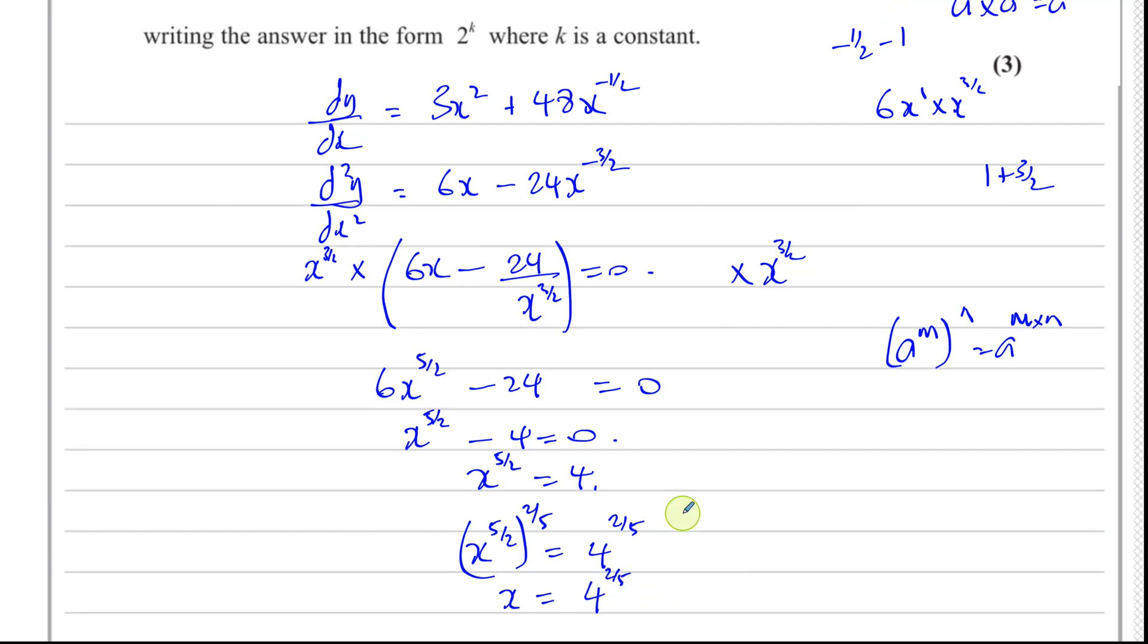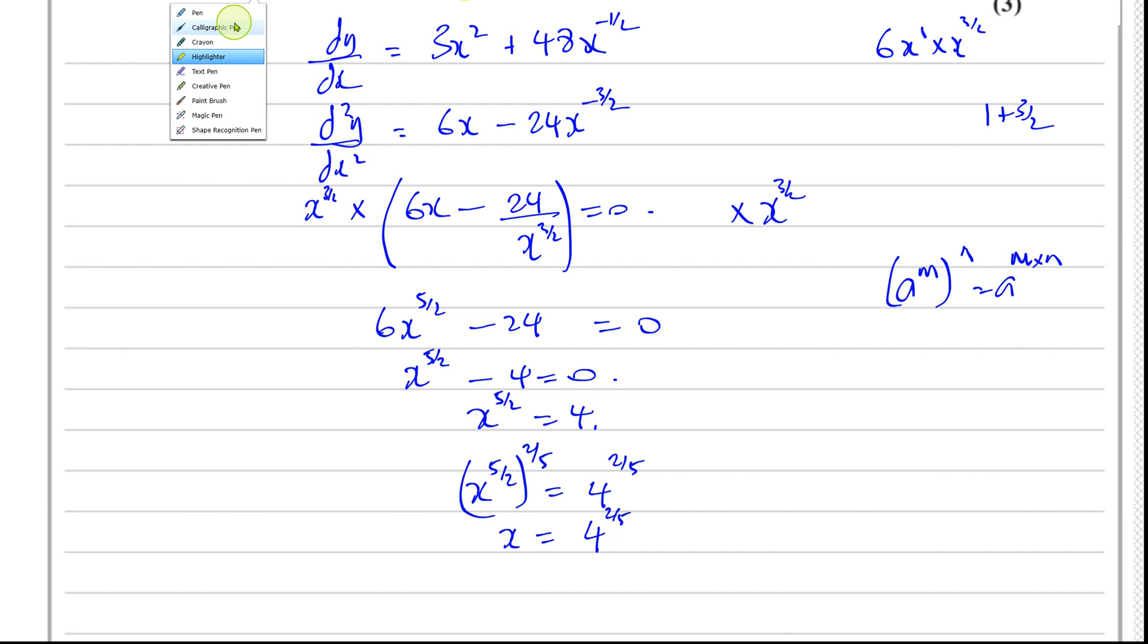Now the question says, writing the answer in the form two to the power of k, where k is a constant. So how can I express four in terms of two? Well, four is the same as two squared. So I can write this as two squared to the power of two fifths. And we can multiply those powers. So you have two times two over five. So you end up with two to the power of four over five. That's the answer. x is equal to two to the power of four fifths.